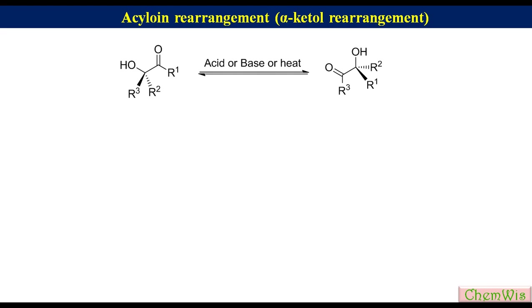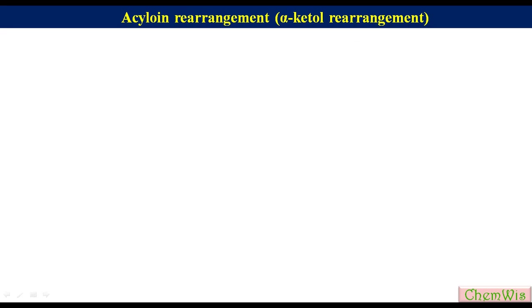This is a reversible reaction, and as a result, the more stable alpha hydroxy carbonyl compound is favored. The major disadvantage of this reaction is that it cannot be used for the synthesis of unstable alpha hydroxy carbonyl compounds. Now we will discuss the mechanism, starting with basic conditions.